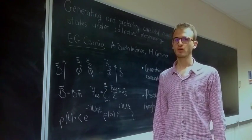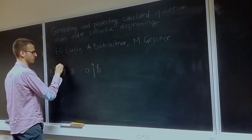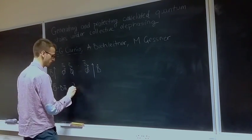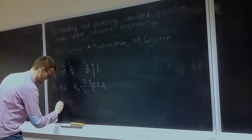Collective dephasing processes occur in any experiments with trapped atomic particles, and they are caused by the fluctuating fields that are used to trap these particles.